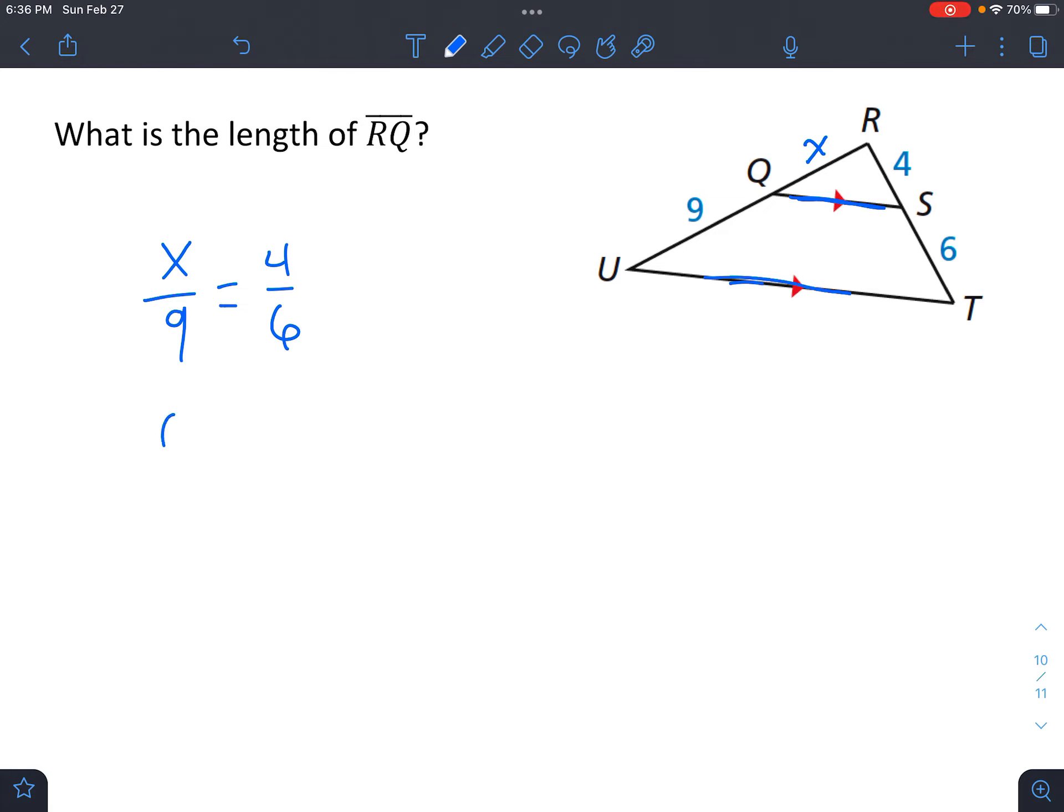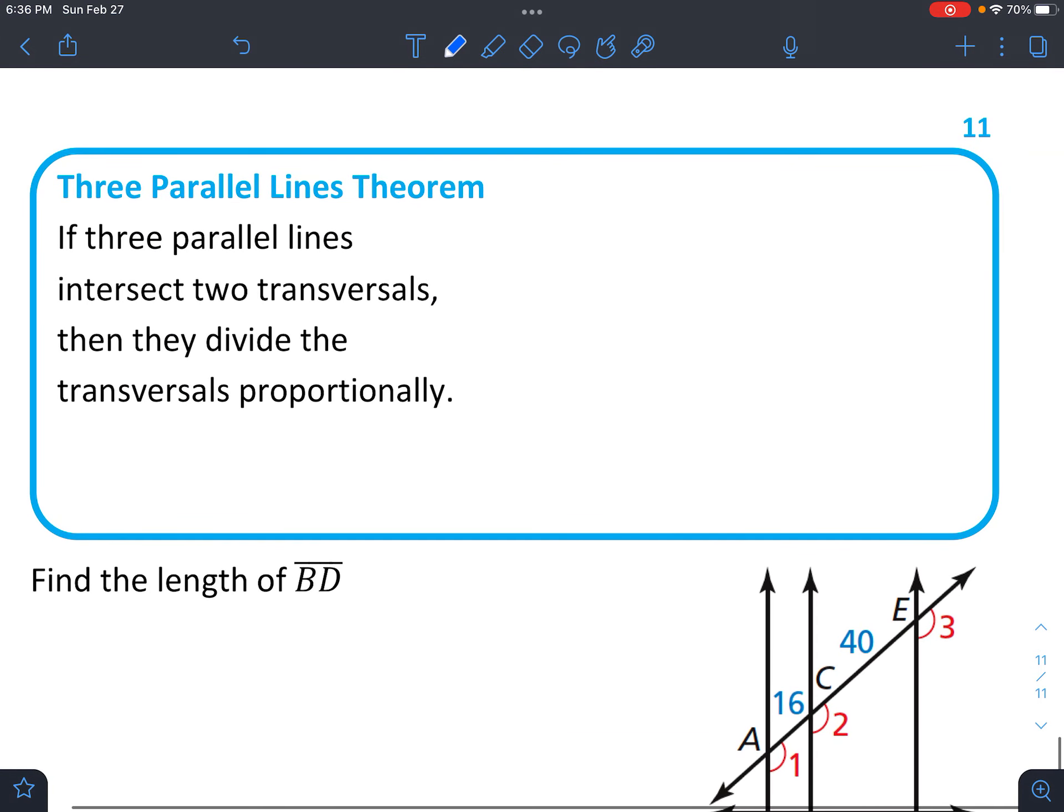Then once you set it up, you can cross multiply. So we get 6X equals 9 times 4. 9 times 4 is 36. Then divide both sides by 6, and you end up with X equals 6.